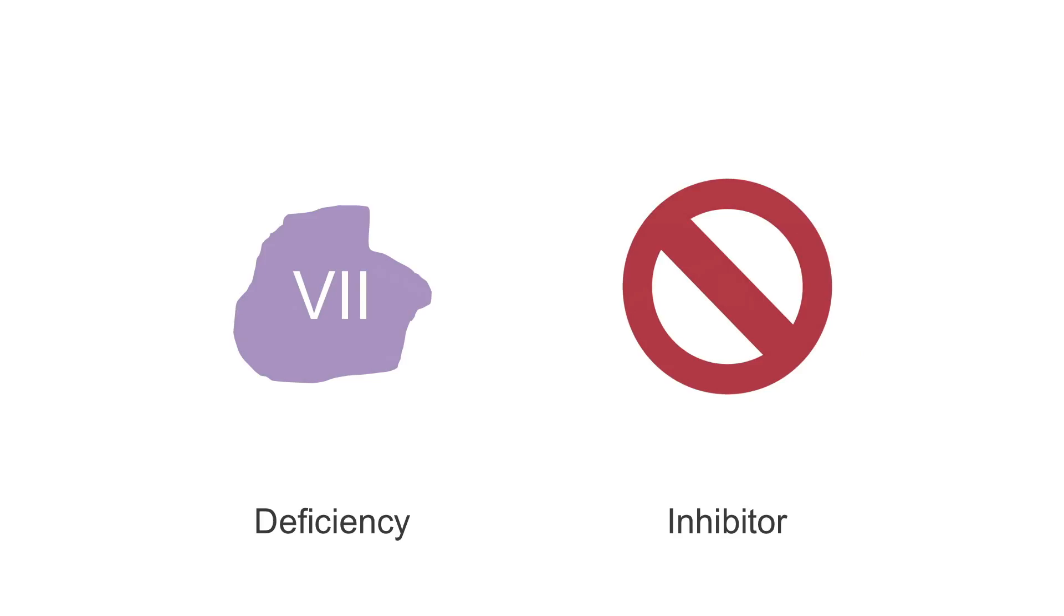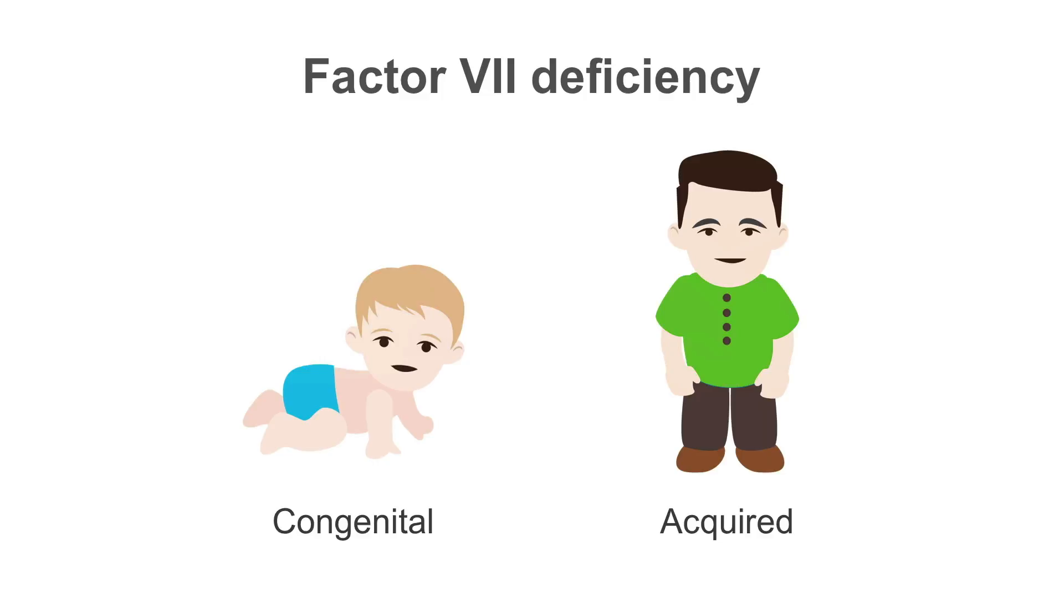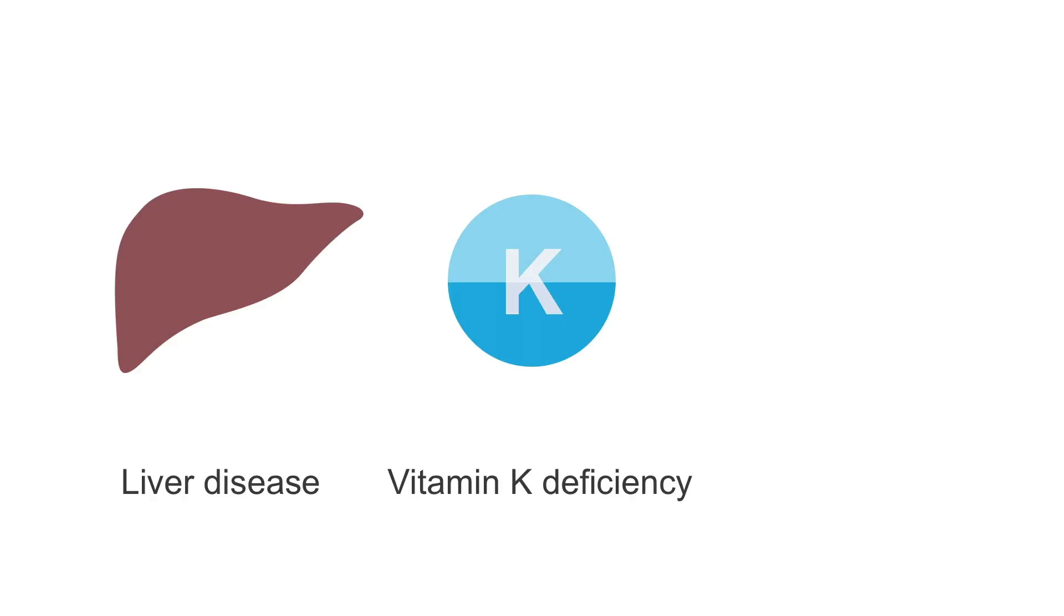This can be due to factor VII deficiency or the presence of an inhibitor to factor VII, which however is very rare. Factor VII deficiency may be inherited, which is again rare, or the deficiency may be acquired. Causes of acquired deficiency of factor VII include liver disease, vitamin K deficiency, and patients on the drug warfarin.